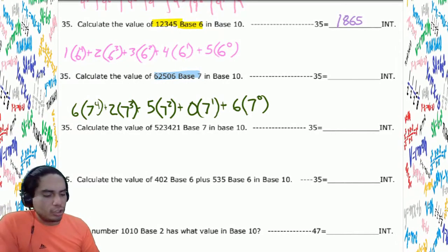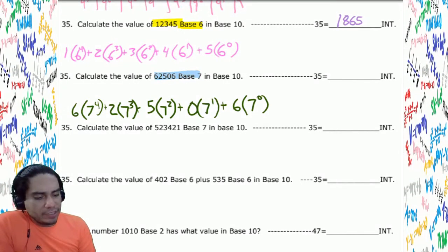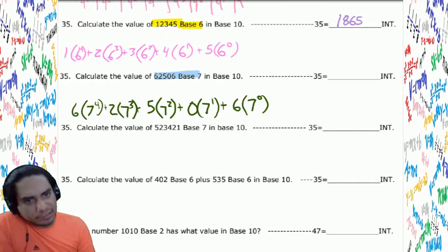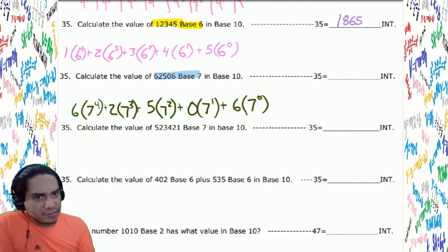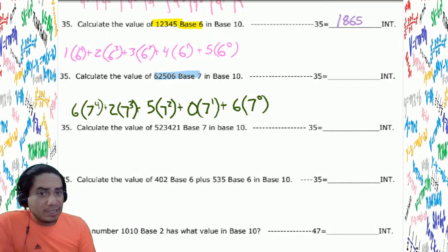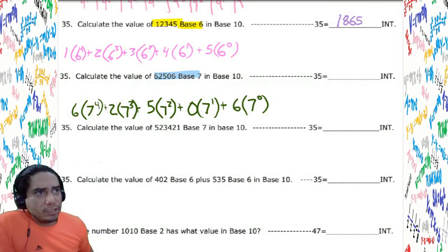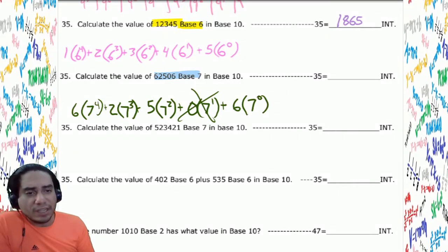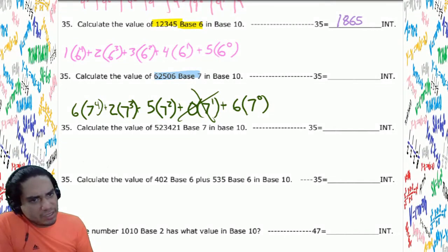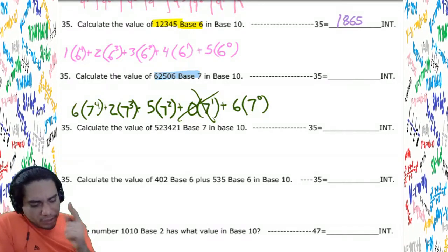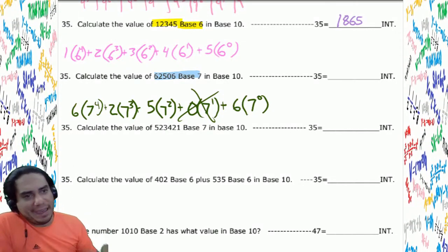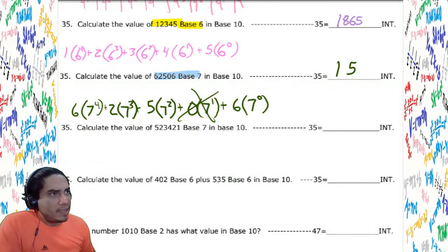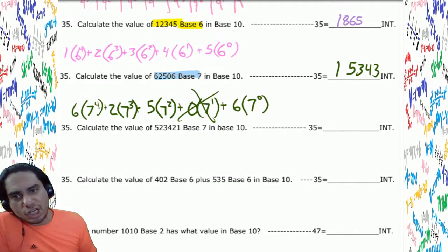On the calculator: 7, enter, 4, y-to-the-x, times 6; 7, enter, 3, y-to-the-x, times 2, plus; 7, enter, 2, y-to-the-x, times 5, plus. We skip 7 to the first since there are zero of them. Then 7 to the zero times 6, plus. Hit yellow show — the answer is 15,343.